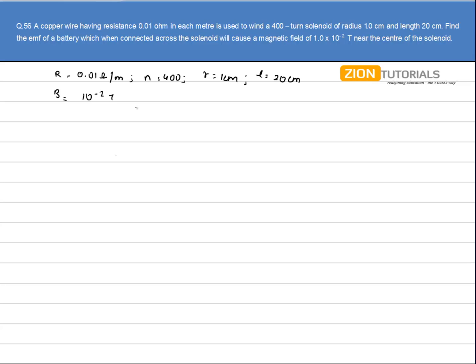First of all, I will calculate the total length of the copper wire. So this is my solenoid and it is wounded like this. Each winding will be of length 2 pi r. I have 400 windings. So the total length of copper wire is number of windings, 400, into 2 pi r.